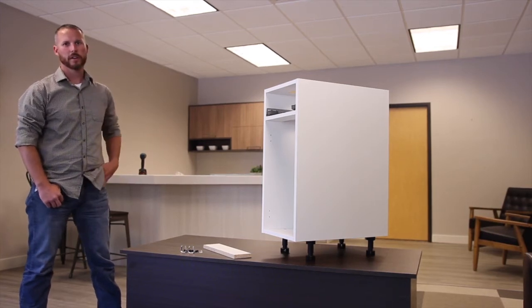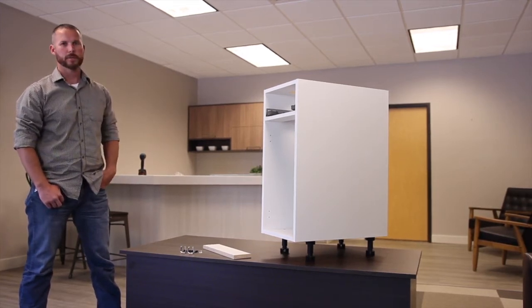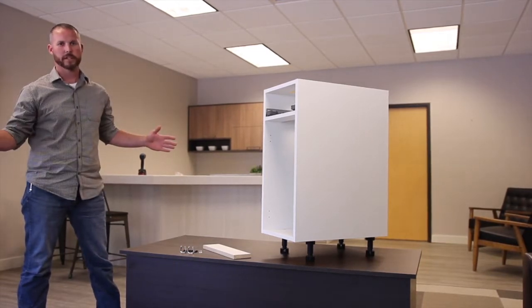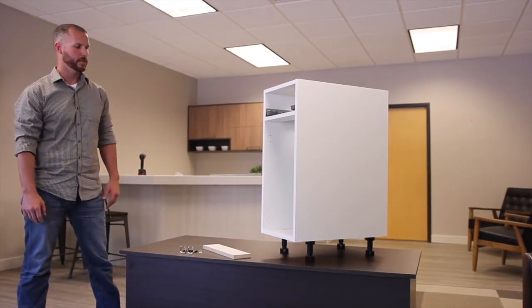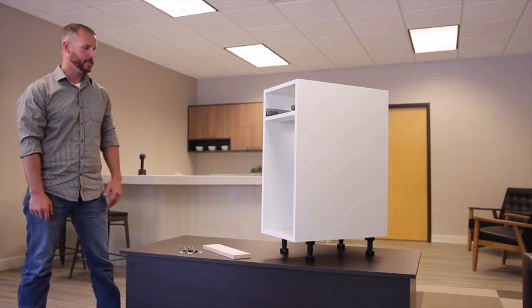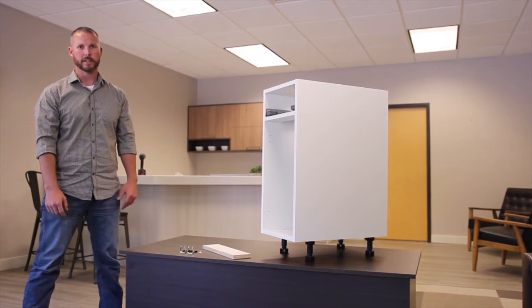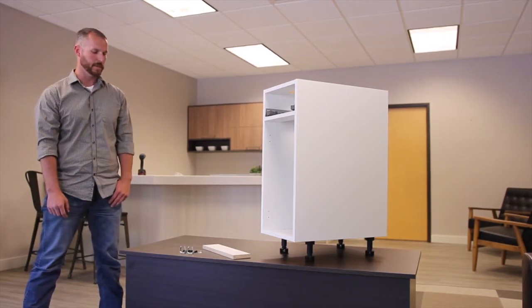Okay, now that we've successfully installed our legs, the next section we're going to do is install the toe kick. Now typically we'd wait until we have the whole kitchen in and all the cabinets in and do the toe kick all at once. Obviously for this demonstration we just have the one cabinet, so we just have a cut down piece of toe kick that we'll install, showing our clip method.